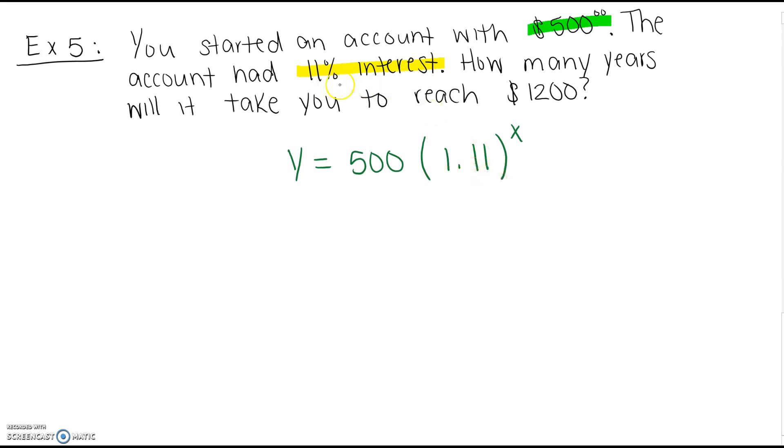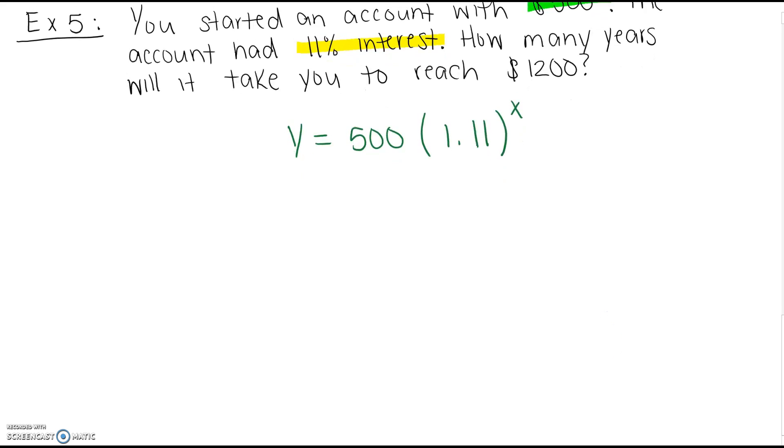Remember because it's a growth, it's got to be greater than 1. 11% is 0.11. So that's how we get 1.11. Now if we go to use our equation, here I'll color code. So the 11% interest is how we get this. Okay.